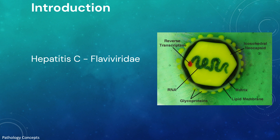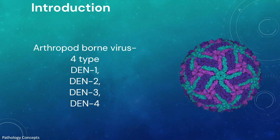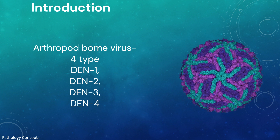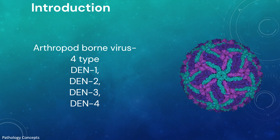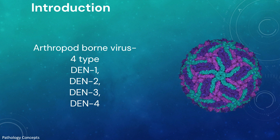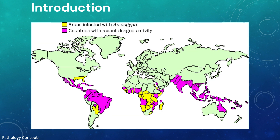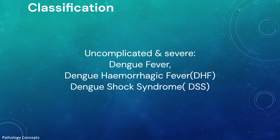Dengue virus is an arthropod-borne virus that includes four different serotypes: one, two, three, and four. In the world, two and a half billion people reside in dengue-endemic regions, with roughly 400 million infections occurring per year, and a mortality rate surpassing five to twenty percent in some areas.